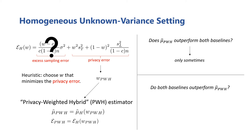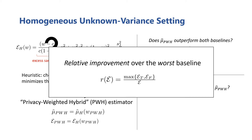The question then becomes, when the PWH estimator is not outperforming both baselines, is it at least outperforming one? To formalize this, we define another variant of the relative improvement represented by this lowercase r, which now compares the hybrid estimator's error to the worst of the two baselines. For a hybrid estimator to always be outperforming at least one of the baselines, we need this weaker measure of relative improvement to always be greater than one.